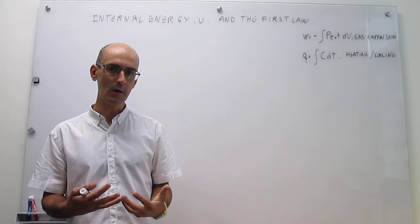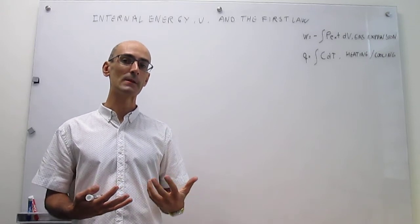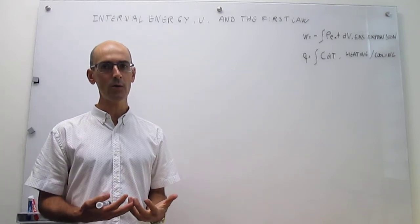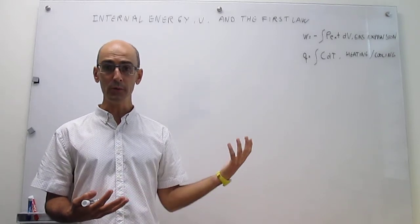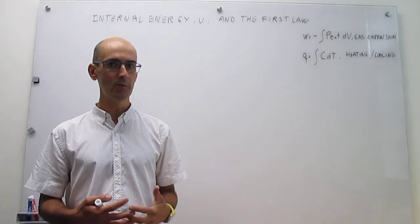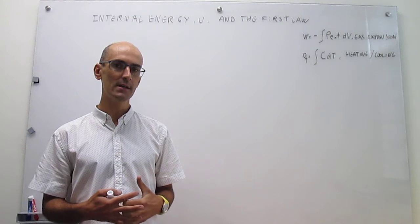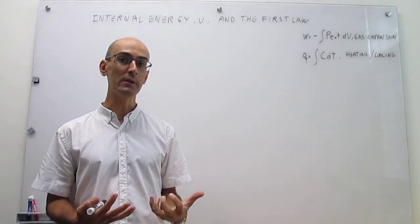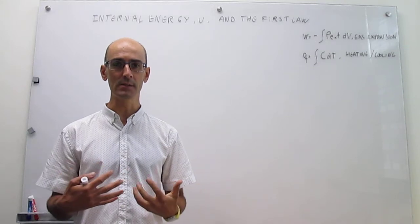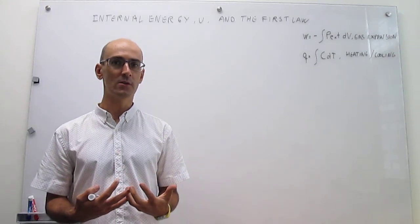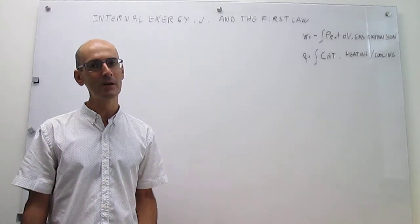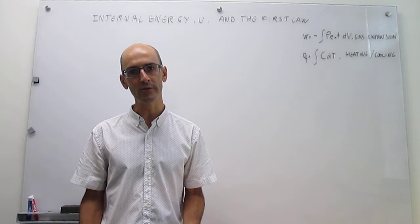Let's try to see how that definition of work and heat takes us to the first law. We know how to compute some examples for energy transfers, but what we don't have yet is a way to do the bookkeeping of energy. We know how energy transfers in and out of systems, but we don't have a metric to determine what the total energy of an object or a system is. That is actually what the internal energy is.